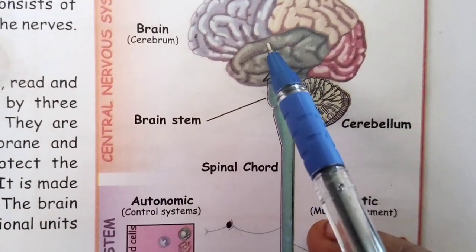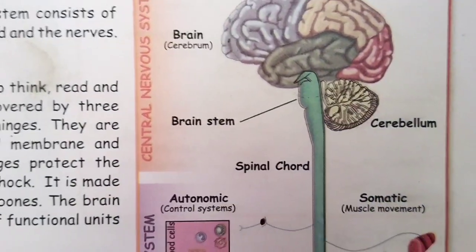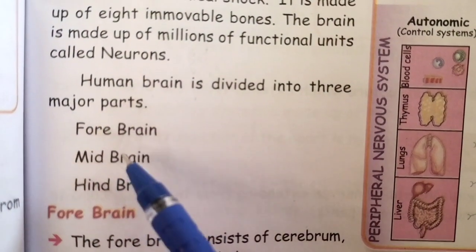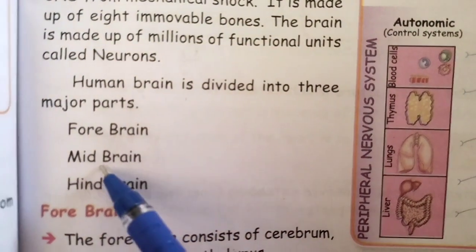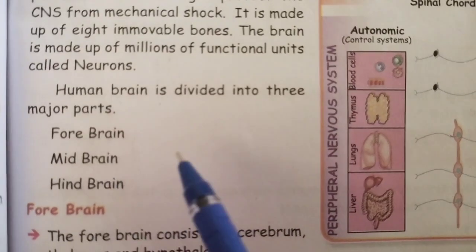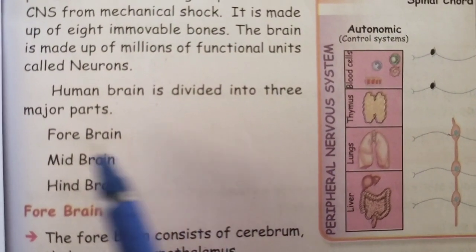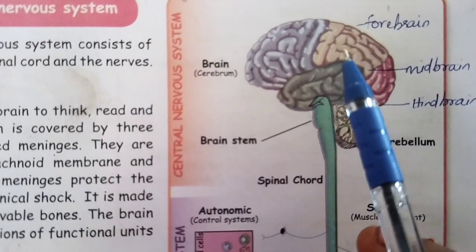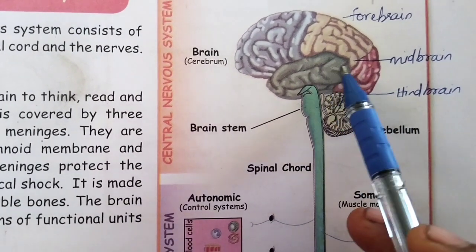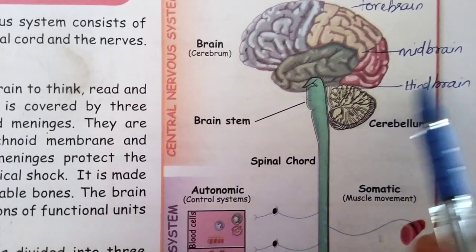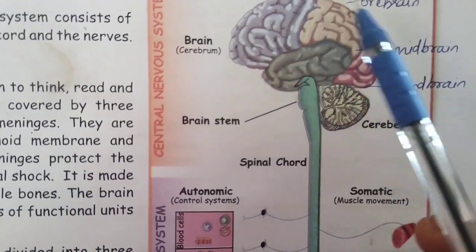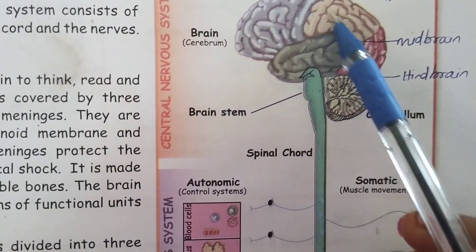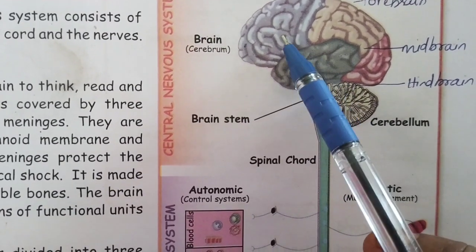Our human brain is made up of millions of nerves called neurons. The human brain is divided into three major parts: forebrain, midbrain and hindbrain. The largest part of the brain is the forebrain, also called the cerebrum.